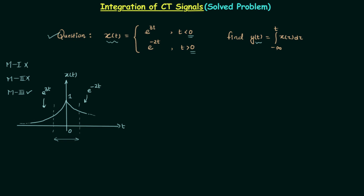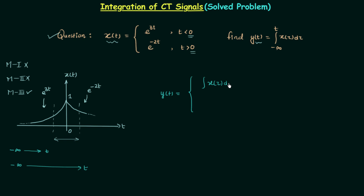We will start from minus infinity and increment time slowly. Since 0 is the barrier, we will first integrate from minus infinity to t where t is less than 0, and then integrate from minus infinity to t where t is greater than 0. So Y(t) equals the integration of X(τ) dτ from minus infinity to t when t is less than 0, and again from minus infinity to t when t is greater than 0.